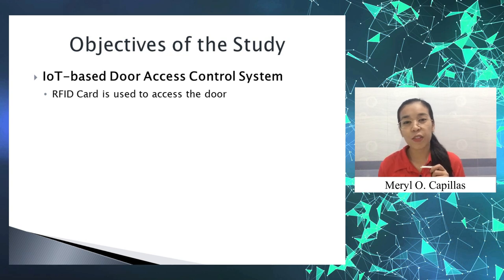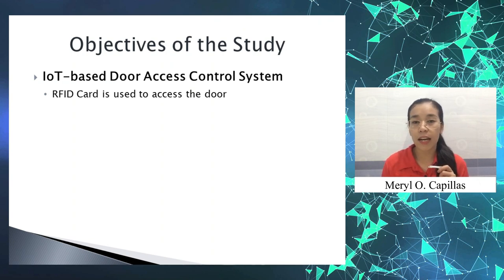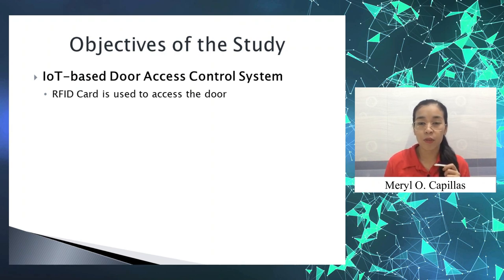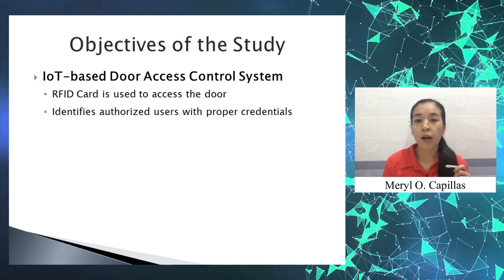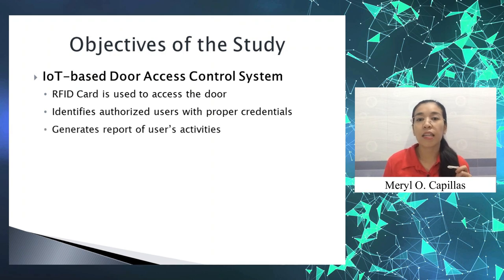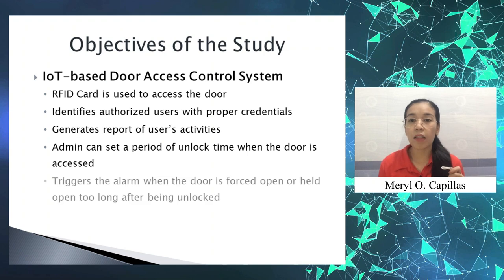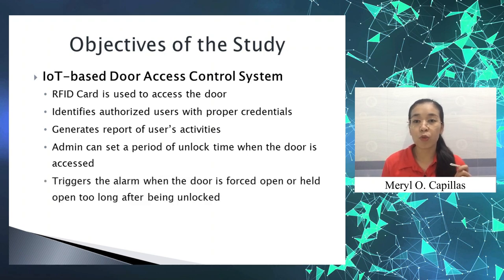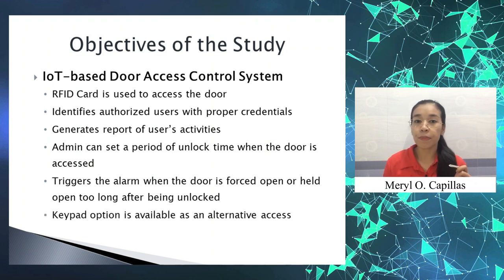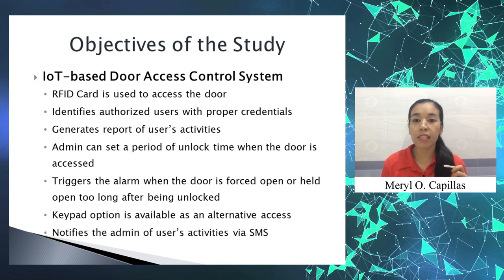The objective of this study is to develop an IoT-based door access control system using RFID card to easily access the door. We utilize RFID technology to provide a solution for secure access to a space while keeping records of the user. This system identifies authorized users with proper credentials and applies restrictions for unauthorized ones. It can also generate reports containing the user's activities. The admin can set a period of unlock time when the door is accessed. An alarm triggers when the door is forced open or held open too long after being unlocked. It has a keypad available as an alternative access. Another feature is that it notifies the admin of the user's activities via SMS.